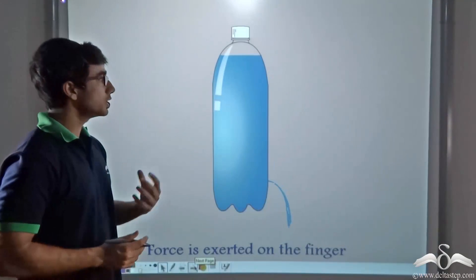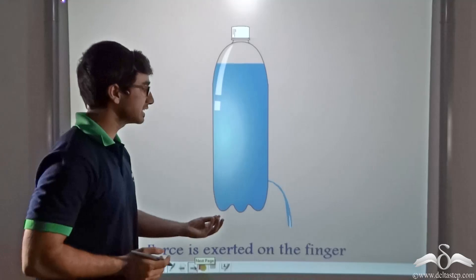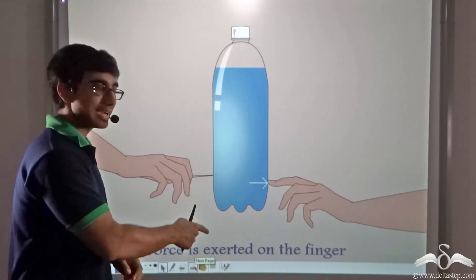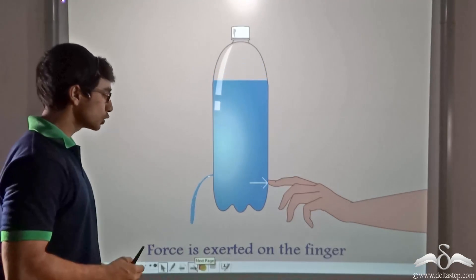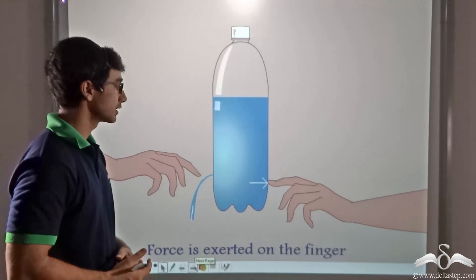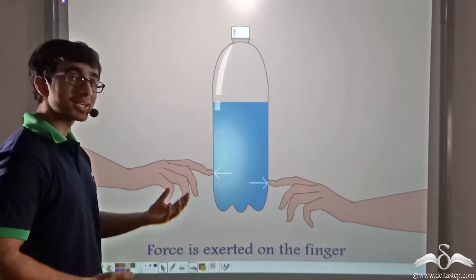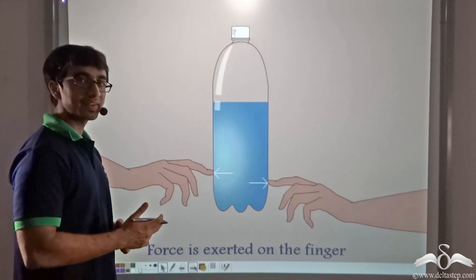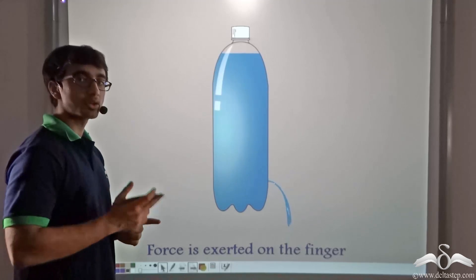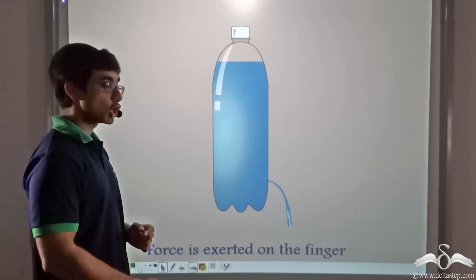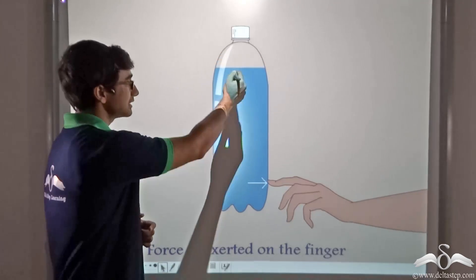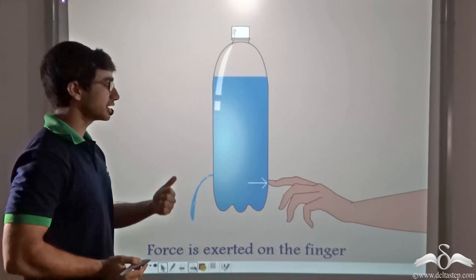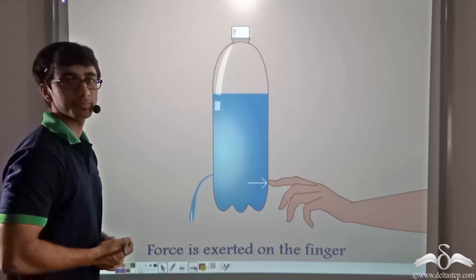You will notice that when water is leaking from this hole, if you bring your finger and place it on the hole, a force will be exerted on the finger. If you make another hole and press your finger to that as well, you will find that a certain amount of force is exerted on that finger by this liquid, as you can clearly see from this animation.